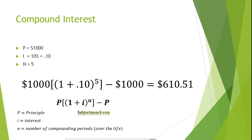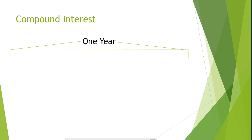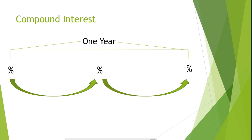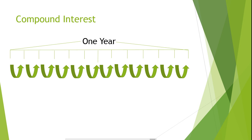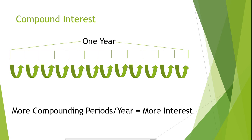Now you can see why compound interest is the kind of interest you would like to receive on an investment. Many loans and investments have multiple compounding periods within a single year. For example, an investment or loan that compounds interest semi-annually means interest is compounded every six months, or twice per year. If interest is compounded monthly, there are 12 compounding periods per year. All else equal, the more compounding periods per year, the more interest earned or paid.